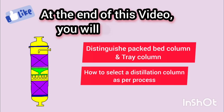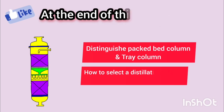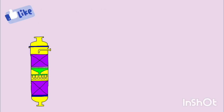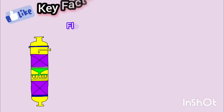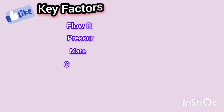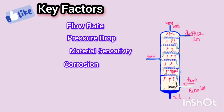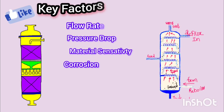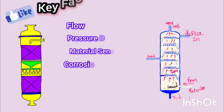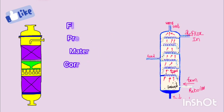When it comes to selecting the right distillation column for your process, there are four key parameters that are absolutely crucial. These parameters are flow rate, pressure drop, material sensitivity, and corrosion.